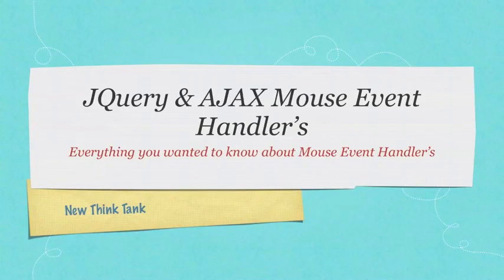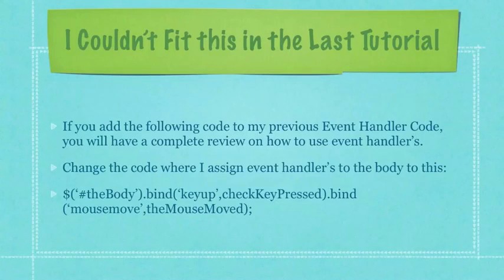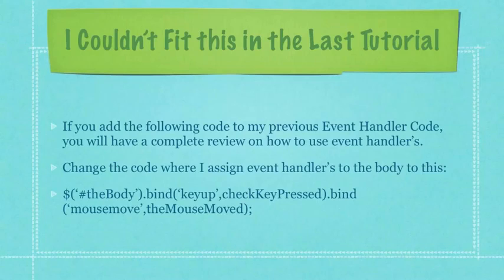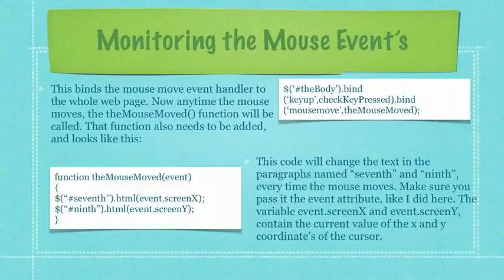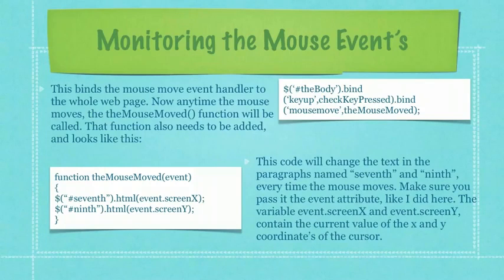Because I forgot about it in the previous tutorial, I'm going to show you exactly how to add mouse event handlers. If you add the following code to my previous event handler code, you will have a complete review on how to use event handlers. Change the code where I assign event handlers to the body to this. I just added an additional event handler — being mouse move — to the body element. Whenever a mouse movement is detected, I will call the function theMouseMove. This text in the upper right-hand corner of your screen will bind the mouse move event handler to the whole webpage.